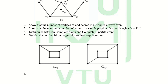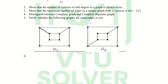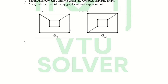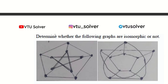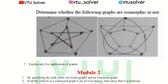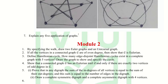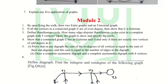The fourth question is: distinguish between a complete graph and a complete bipartite graph. The fifth question is: verify whether the following graphs G1 and G2 are isomorphic or not. The sixth question is: determine whether the following graphs are isomorphic or not. The last question is: explain five applications of graphs.